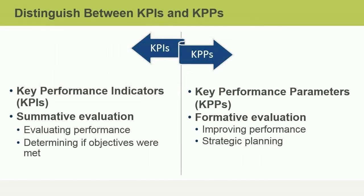There are two basic ways of using performance indicators. We can use key performance indicators or KPIs to think back on what happened in the past. When we look backwards using a summative evaluation, we're able to evaluate the performance of the project, identify variance between that performance and the plan, and determine if objectives were met.